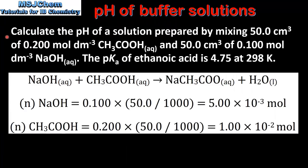Next we look at one more example. Calculate the pH of a solution prepared by mixing 50 cm³ of 0.2 mol dm⁻³ ethanoic acid and 50 cm³ of 0.1 mol dm⁻³ sodium hydroxide. We'll start by writing the balanced equation: sodium hydroxide reacts with ethanoic acid to produce sodium ethanoate and water.